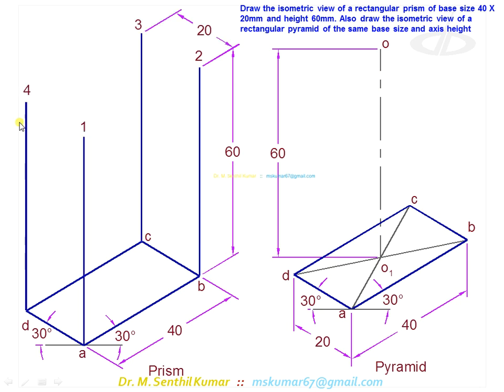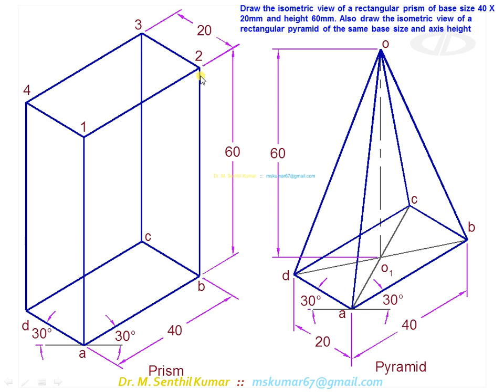Through the other points also draw isometric height lines equal to 60. Join 1, 2, 3, 4 at the top. That completes the isometric view of the prism.